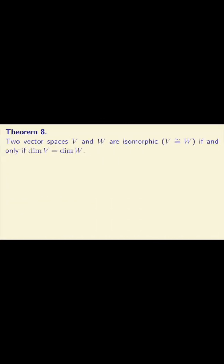Theorem 8, which is really the main point of all this, says that two vector spaces V and W are isomorphic if and only if dim V equals dim W. So if they have the same dimension, they are basically the same space, just with different labels for their vectors?